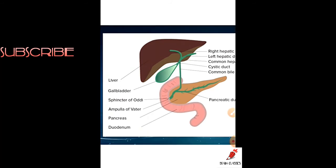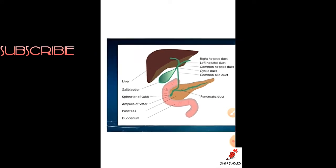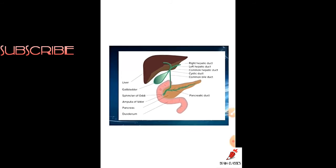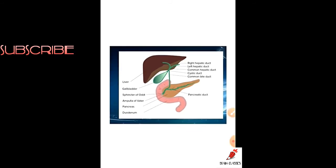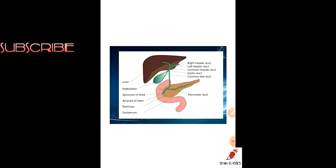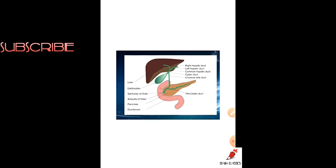The sphincter at the duodenal papilla helps in the entry of bile and pancreatic substances into the duodenum for digestion and absorption of nutrients. This slide covered the pancreatic duct, right and left hepatic ducts, common bile duct, cystic duct, and the hepatopancreatic ampulla.